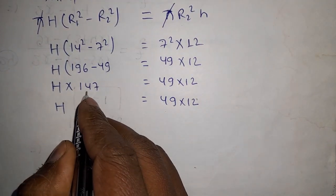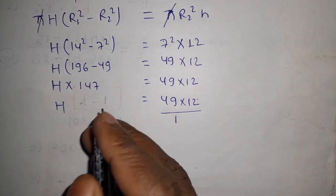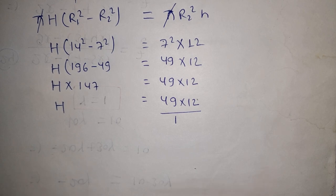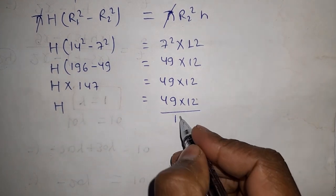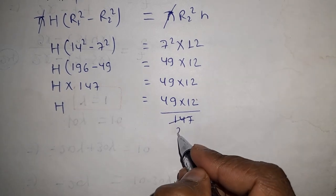You can multiply here and divide here. We have to find H's value, so we'll bring H to one side and move this term to the other side.